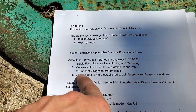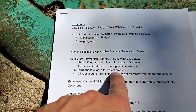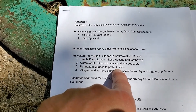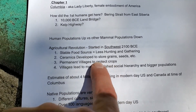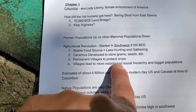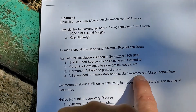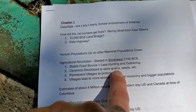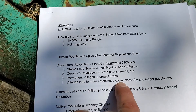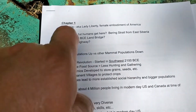As farming took hold, permanent villages arose. People wanted to protect their crops rather than plant and leave. Permanent villages led to established social hierarchies and bigger populations. When people were just moving around hunting and gathering, populations tended to be smaller with less social hierarchy. Once an adequate food source developed and towns formed, social hierarchy began to emerge.